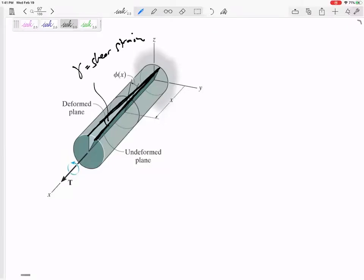If I twist it, if I give it a torque, it might move some angle gamma, and that is the shear strain.